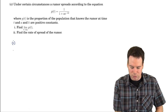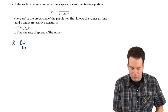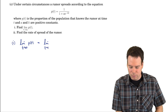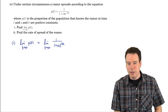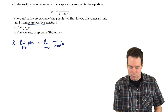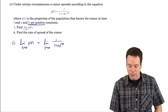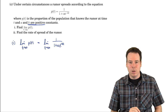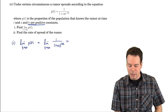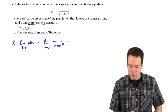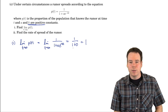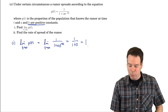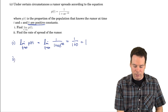The limit as t goes to infinity of p(t) is the limit of 1 over (1 + ae^(−kt)). As t gets really big, k times t is a large positive number, so negative kt is a large negative number. e to a large negative number gets really small, close to zero. So ae^(−kt) goes to zero, and we get 1 over (1 + 0), which equals 1. So after a really long time, 100% of the population knows about the rumor.